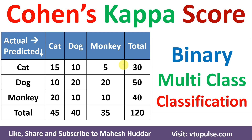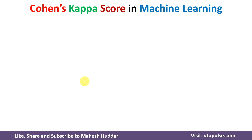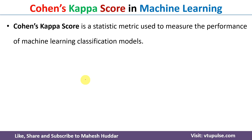Welcome back. In this video, I will discuss how to calculate Cohen's kappa score given the confusion matrix for binary and multiclass classification problems in machine learning. Before we understand how to calculate Cohen's kappa score, first we understand what is Cohen's kappa score and how to interpret it.